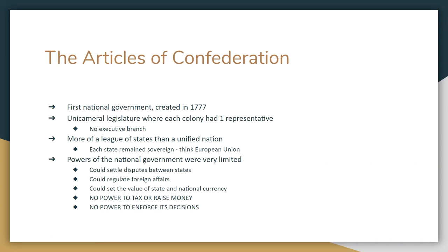Think more like the European Union, where all the countries are technically independent but work together as a united front. The powers of the national government under the Articles of Confederation were very, very weak. The national government could settle disputes between states, regulate foreign affairs and Native American affairs, and set the value of money to ensure fair trading. But it had no power to tax, no power to raise or create money, and no power to enforce its decisions. So if a state disagreed, there was nothing the national government could do.